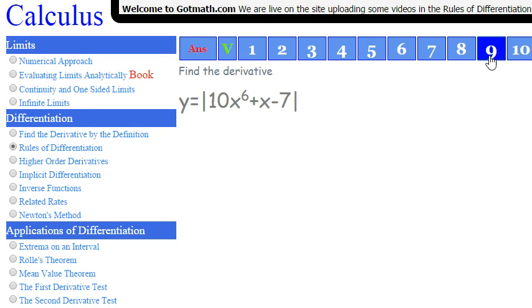This problem is coming from this section here, button 9, whatever you want to call it. It says find the derivative. We've got y is equal to the absolute value, and inside we've got 10x to the 6 plus x minus 7. So everybody gather around. Let's move into the classroom.